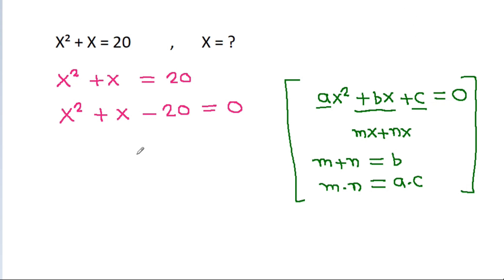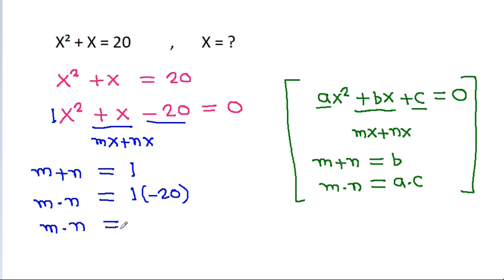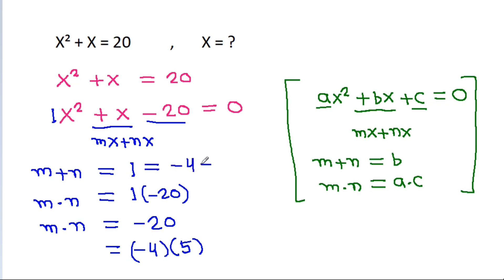So here, we need to write plus x as mx plus nx, such that m plus n should be equal to 1 and m times n should be equal to 1 times minus 20, that is minus 20. And minus 20 is minus 4 times 5, and 1 can be written as minus 4 plus 5.